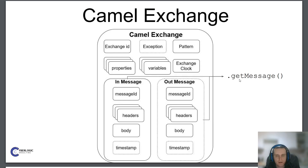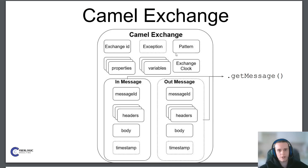You can get the stored message with the getIn() method. The Camel exchange contains the following metadata: exchange ID, which is a unique identifier generated by Camel; exception, which is a Java exception that might be thrown during route flow; pattern, which indicates if the exchange is used for request-reply or event messaging; properties and variables, which are maps containing different metadata similar to headers; and exchange clock, a Java object used to obtain a timestamp of exchange creation.